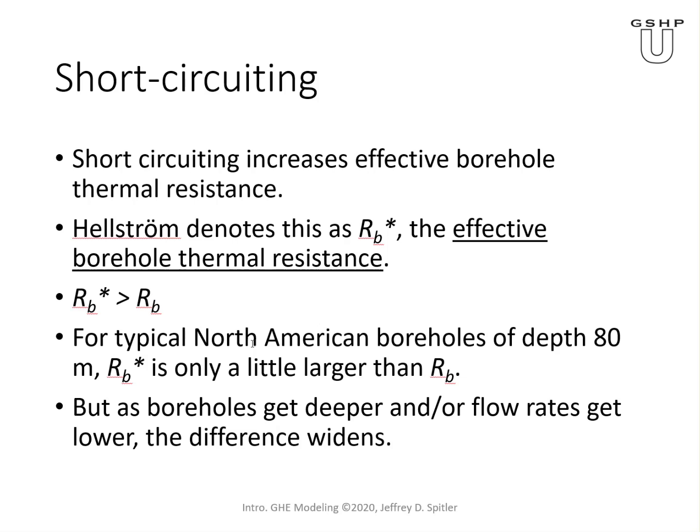When I first got into this about 25 years ago, I thought it wasn't a big deal. For a typical borehole of say 76 meters or 250 feet, RB star is only a little larger than RB — maybe off by one to three percent, not really worth worrying about. But boreholes have gotten deeper, and in places like Scandinavia the average borehole depth is around 186 meters. In that case, the effect of short-circuiting becomes larger and needs to be accounted for. It also becomes significant if you have very low flow rates.